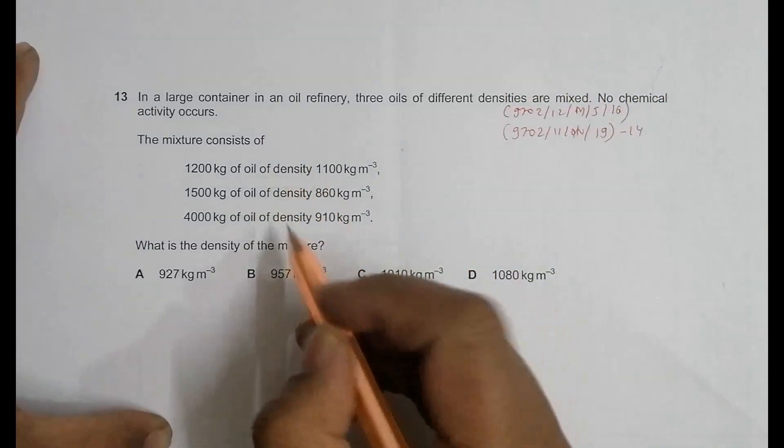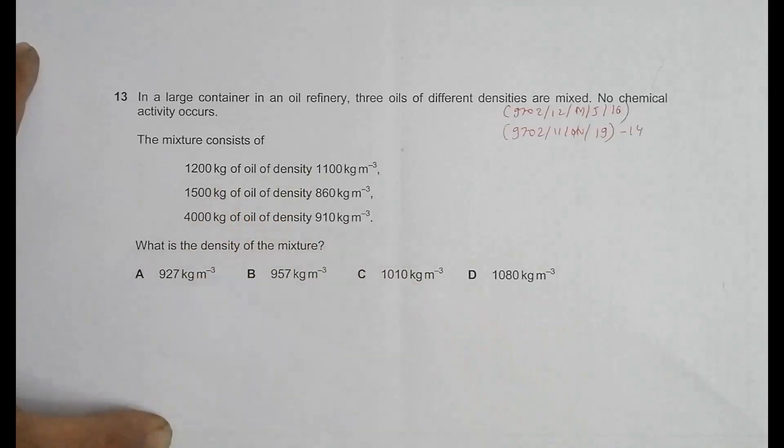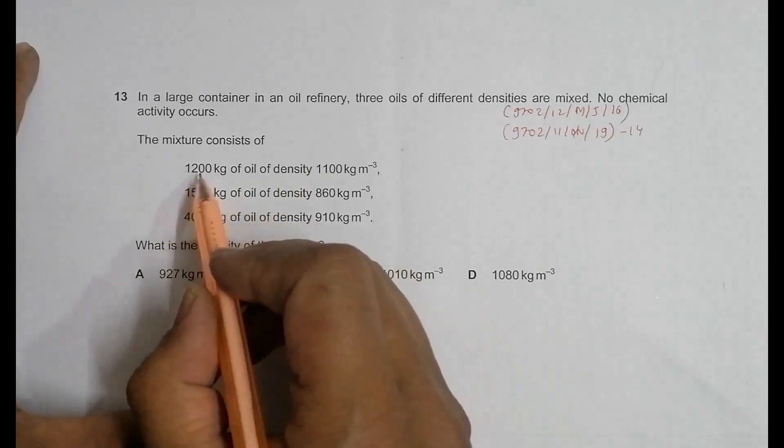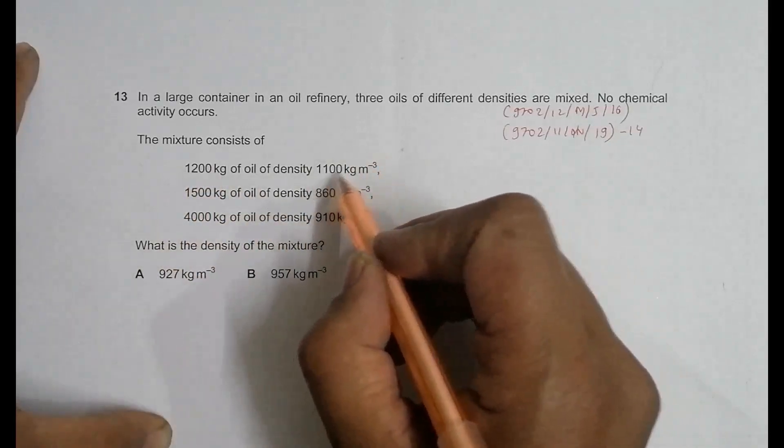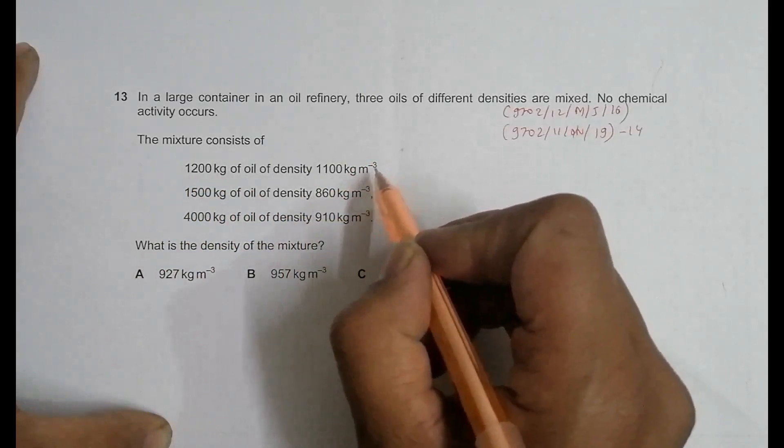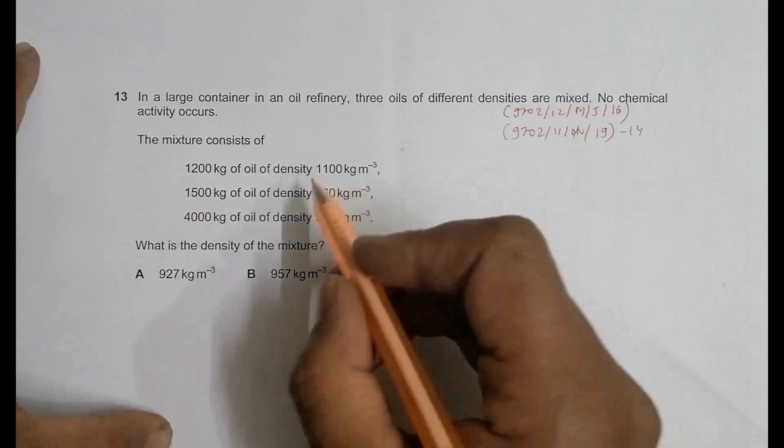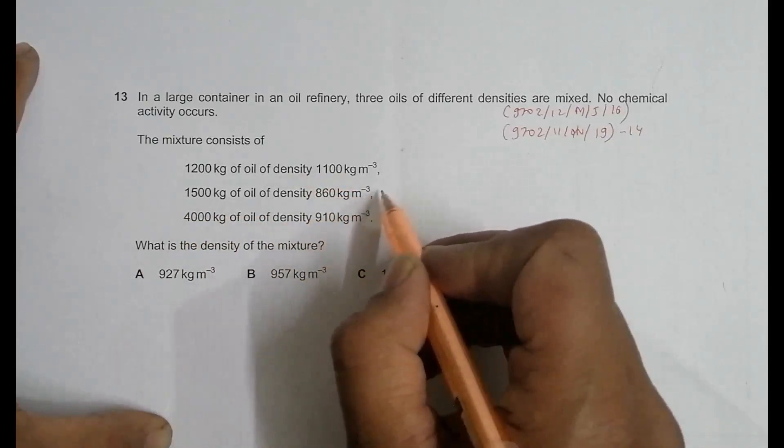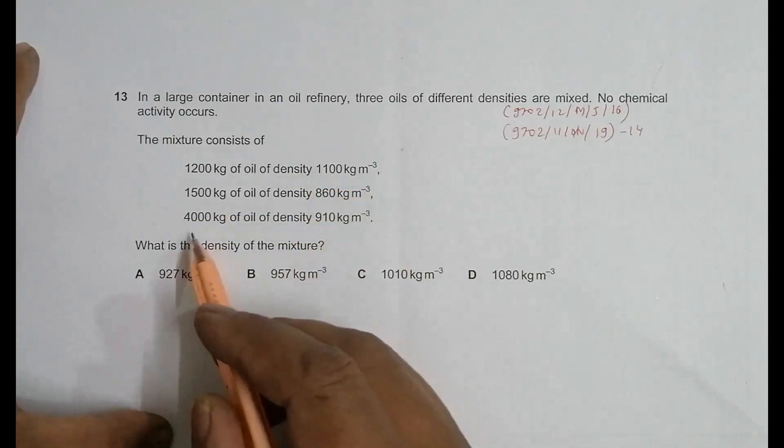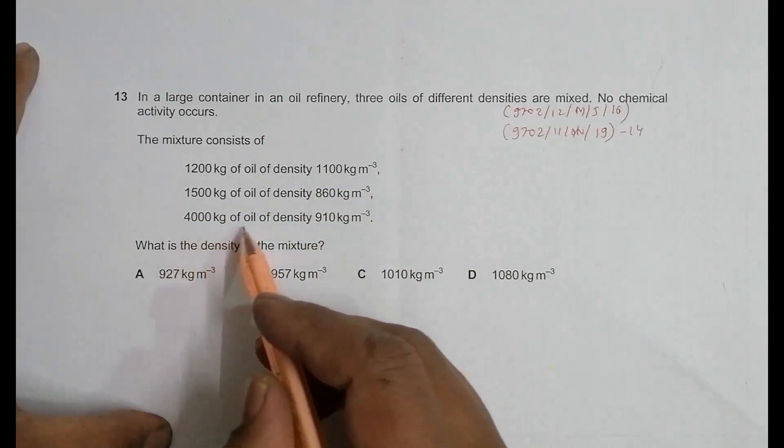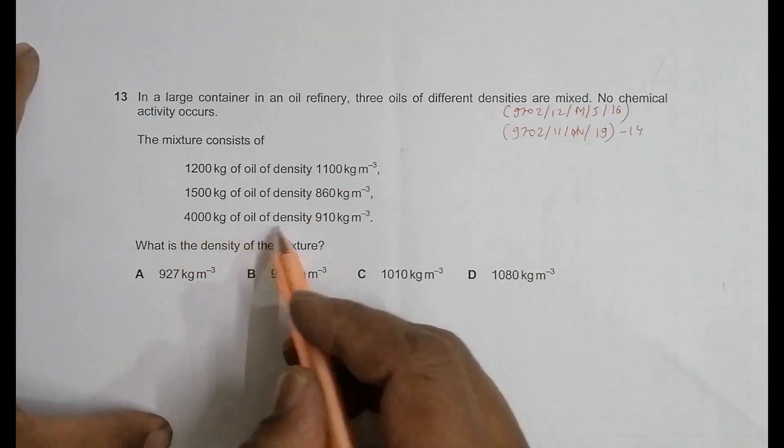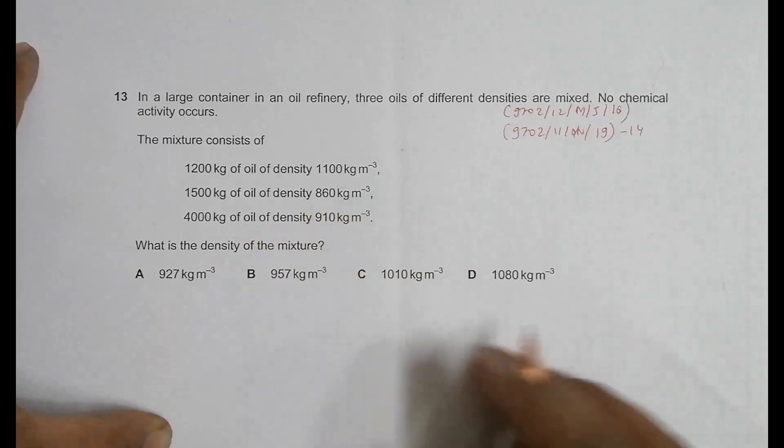The mixture consists of three types of oil. One oil has mass 1200 kg and density 1100 kg per meter cubed, so it's denser than water. Another has 1500 kg of oil of density 860 kg per meter cubed, it's lighter than water. And we have 4000 kg of oil density 910 kg per meter cubed.